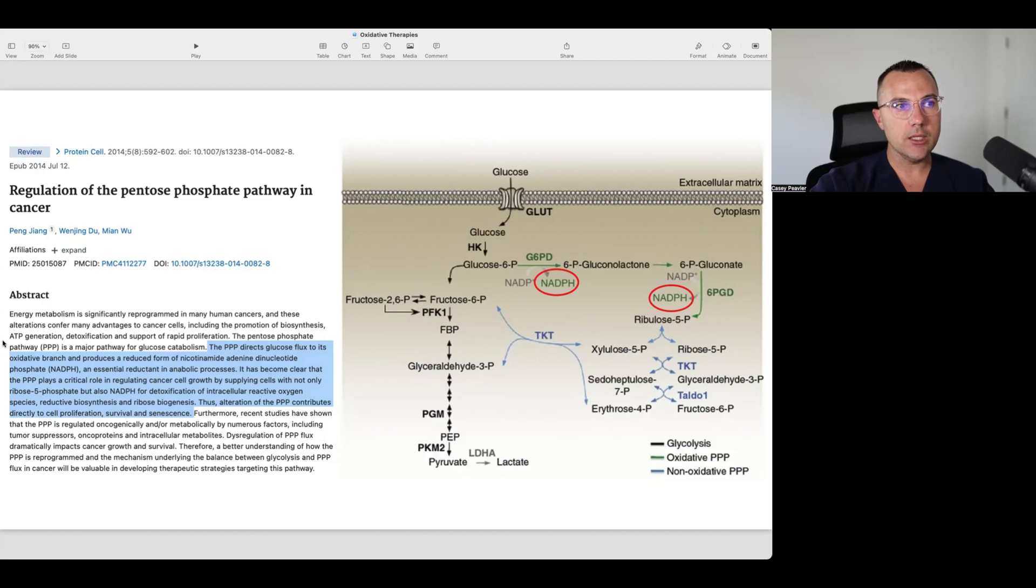NADPH is used for reductive biosynthesis and ribose biosynthesis. Therefore, alterations in PPP contribute directly to cell proliferation, survival, and senescence.